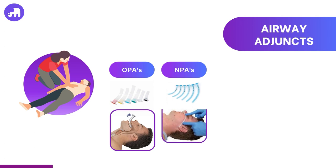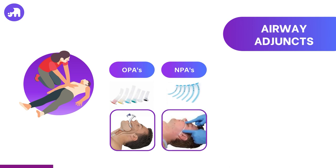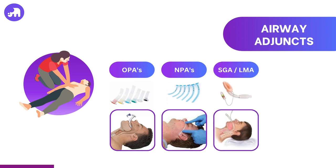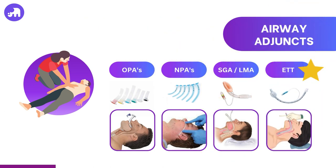Nasal pharyngeal airways or NPAs provide a clear pathway for airflow through the nasal passages, often chosen when oral insertion is challenging or inappropriate. Supraglottic airways and laryngeal mask airways sit above the glottis, enabling a clear passage for airflow and effective ventilation. They are often used in theatre and are suitable when conventional ventilation is difficult to achieve. The gold standard in airway management remains the endotracheal tube or ETT. ETTs are inserted into the trachea, ensuring a secure airway and allowing precise control over ventilation and oxygenation, and also have the potential added benefit of recording end tidal CO2 levels. The selection of an adjunctive airway depends on the patient's condition, anatomical considerations and the rescuer's skill level and equipment availability.